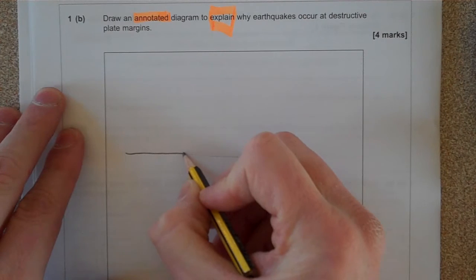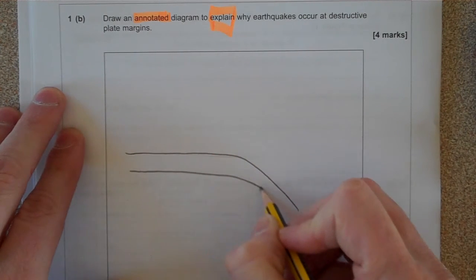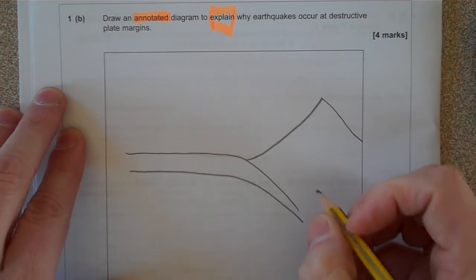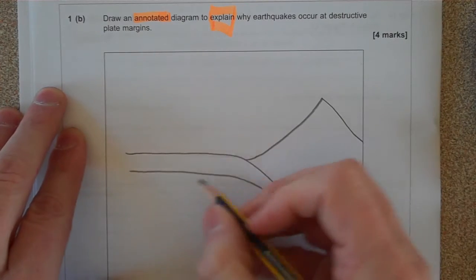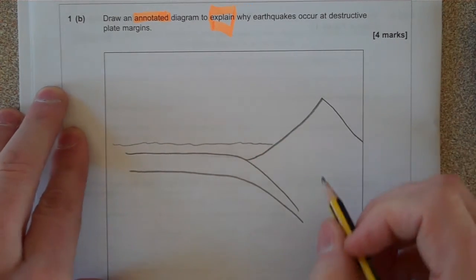So we're going to start off by drawing the oceanic plate, because these plates occur where there's an ocean plate colliding with a continental plate. So there's our diagram to show the oceanic plate and the continental plate. The oceanic plate will be under the sea, the continental plate.